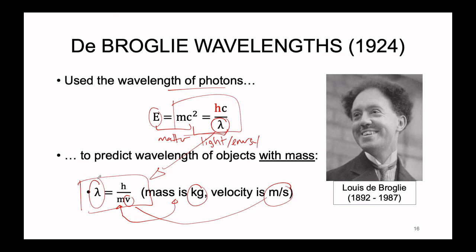Rearranging and solving for lambda gives us exactly the de Broglie wavelength equation: λ = h / (mv). We can use it to predict the wavelength of objects that have mass. The mass in this equation must be in kilograms and the velocity — since matter technically can't move at the speed of light, we swap c for v — must be in meters per second. If we have the mass and velocity of an object, we can predict exactly what wavelength it would have if it were showcasing its wave-like behavior. This equation works not just on the quantum scale but on the macroscopic scale as well — we can predict wavelengths for basketballs, baseballs, cars, or even people.